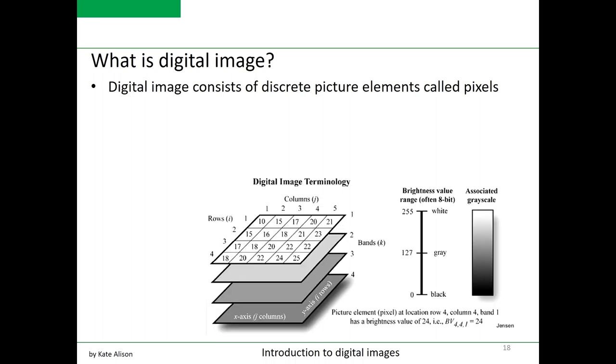The intensity of each pixel corresponds to the average brightness radiance measured electronically over the ground area corresponding to each pixel. It consists of columns and rows.